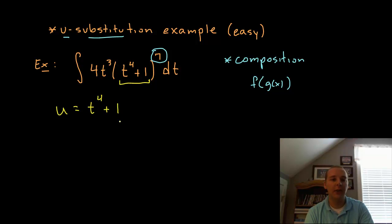Now there are exceptions to this rule, but a good 9 out of 10 times it's typically the inside of two composed functions. So this is a u. Then if we are going to change everything from t's into u's to do the substitution, we also need du. To get the du, we will differentiate this expression, which would be 4t cubed dt.